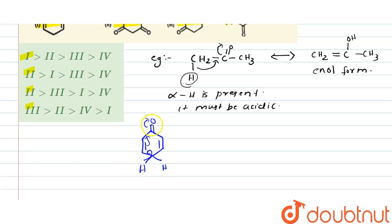Transfer from keto form to enol form. This is the enol form. Here we can see that in this structure is an aromatic ring.